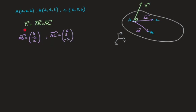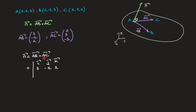Now that we have these two vectors, we can go ahead and calculate a normal to the plane. Vector N is equal to the cross product of AB and AC. To calculate this, I like to use the determinant of a matrix method. The top row contains the unit base vectors i, j, and k. The second row is made up of the components of AB: 3, negative 1, 2. And the third row is made up of the components of AC: 0, 3, negative 1.